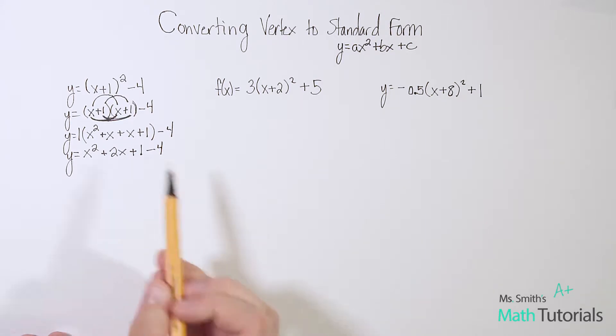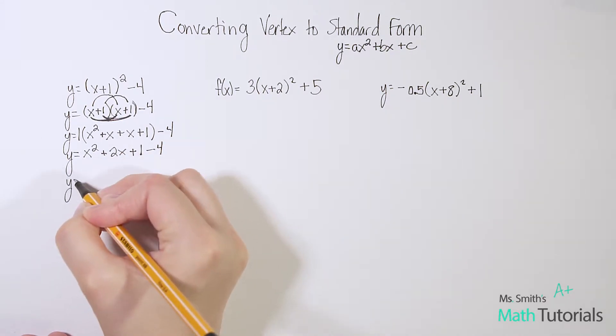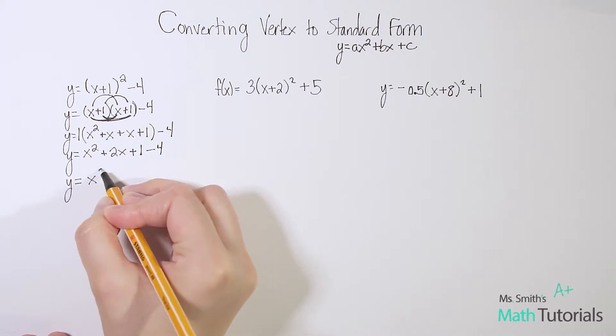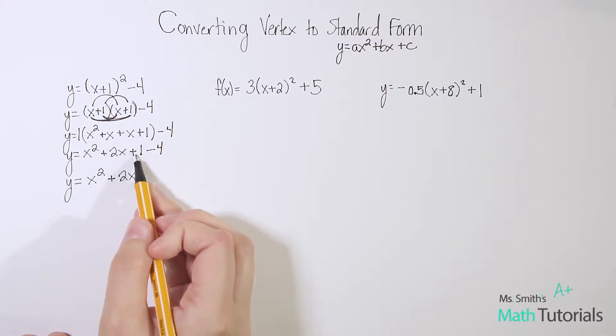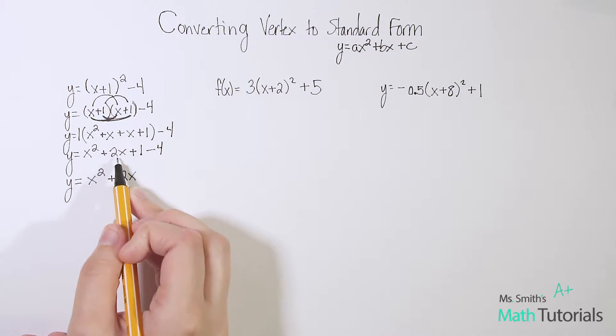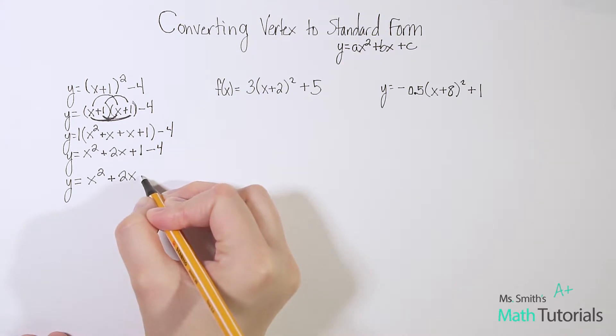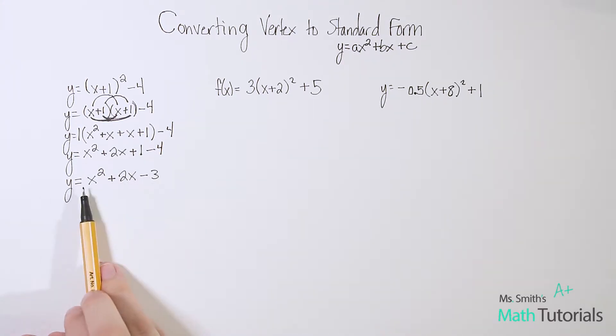Now as my final step, I can combine this -4 with this positive 1. So we have y = x² + 2x, and then 1 - 4 would be -3. I would check to make sure are there any other like terms I can combine. No. And then double check to make sure am I in standard form. As long as you've done this correctly, you should end up in standard form. I am in that ax² + bx + c form.